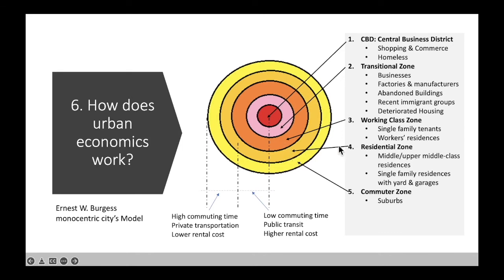In number four, one step away, you have what's called the residential zone. In the residential zone, people who want to own a single family home will be a step further out. Most people renting are closer to the central business district, but people who want to own a house may go a little further out. That's where you get upper and middle class residency and single family residences.